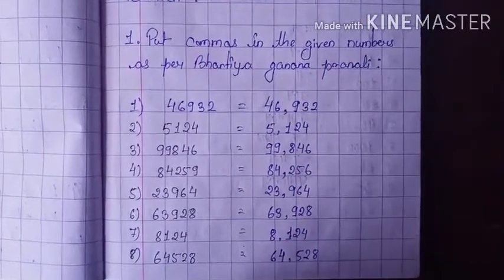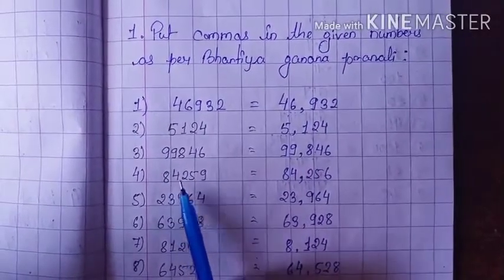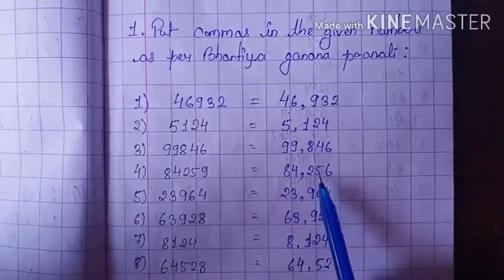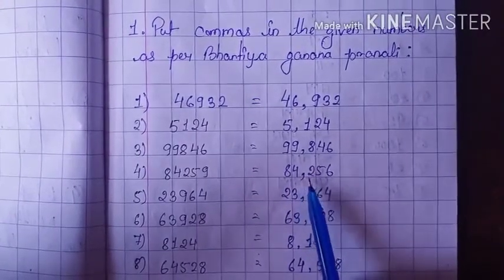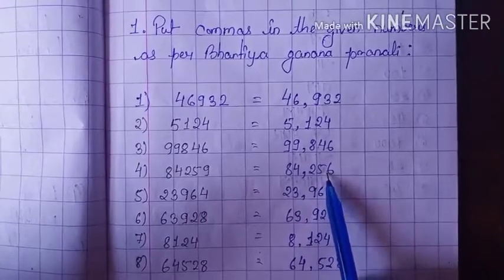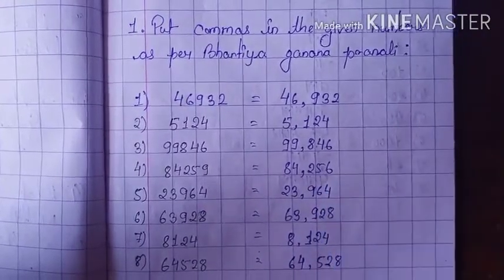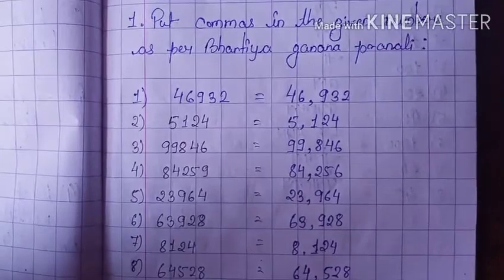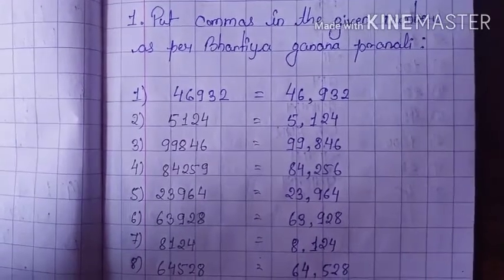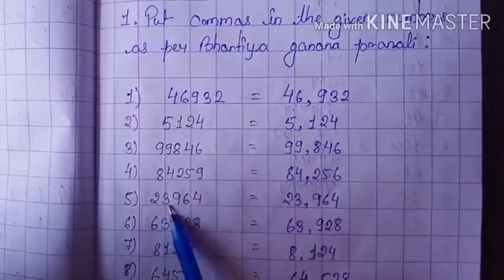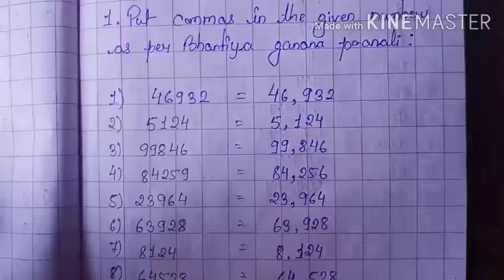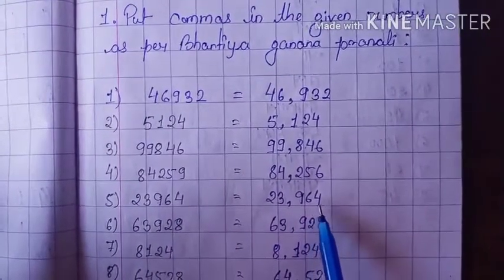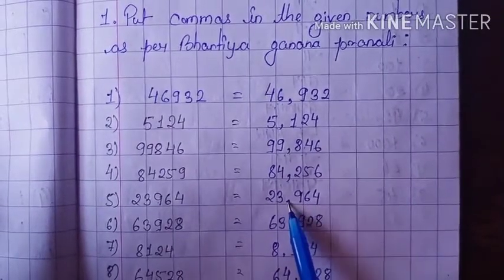We need to start placing commas from the right-hand side: after 3 digits, then after 2 digits, then after 2 digits. Next number: 23964. From the right — 4, 6, 9, then comma, then 3 and 2. Next: 63928. From the right — 8, 2, 9, comma, then 3 and 6.